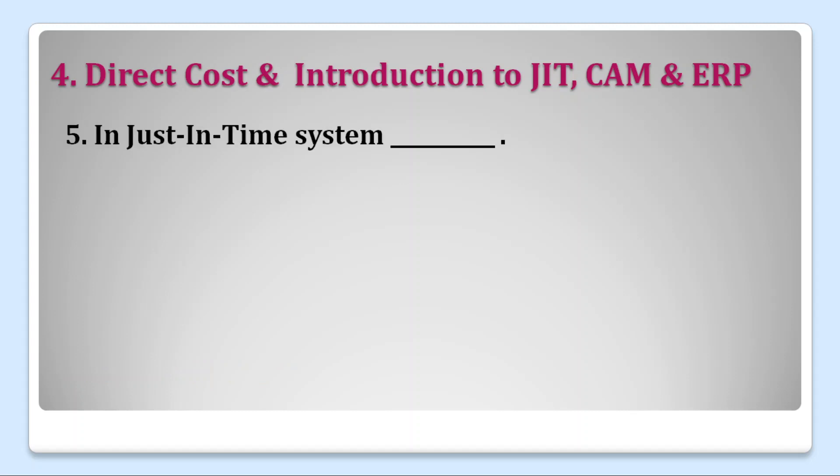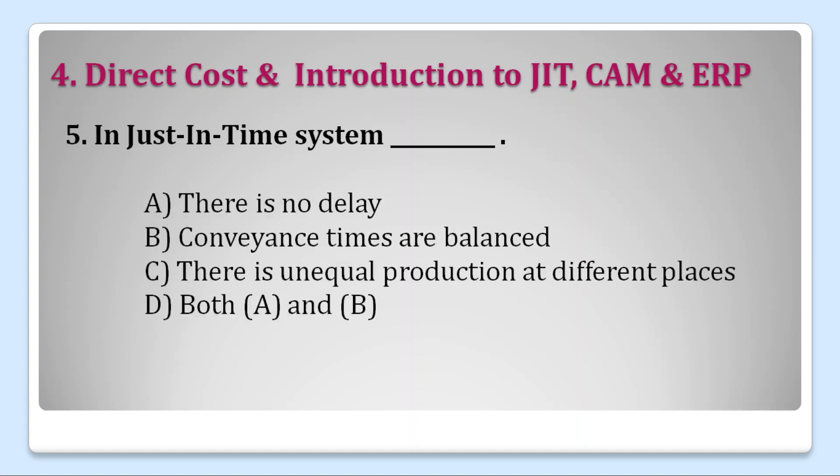Question five: in a Just in Time system — options are: A. there is no delay, B. convenience times are balanced, C. there is uneven production at different places, or D. both A and B. In Just in Time, there is no delay and convenience times are balanced. Right answer is D. Both A and B.